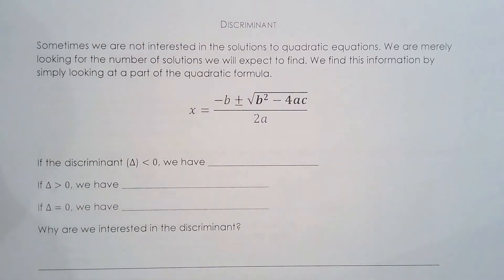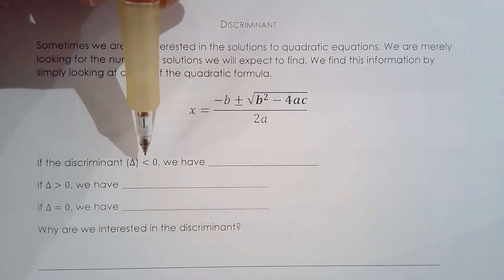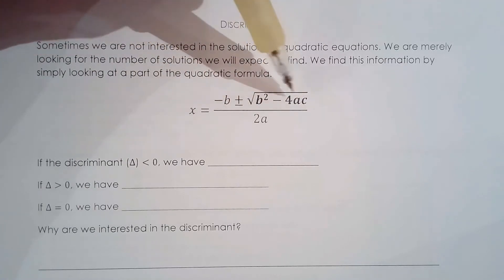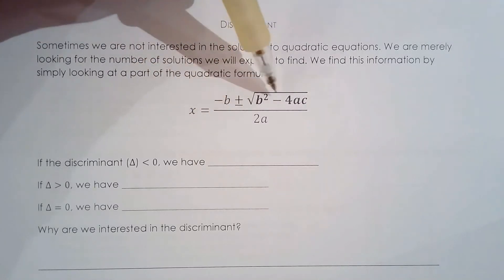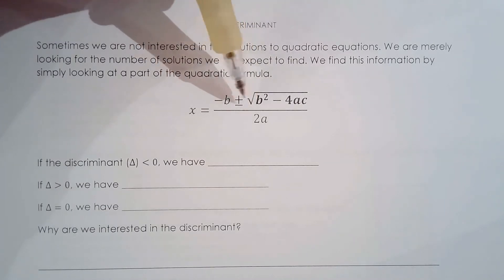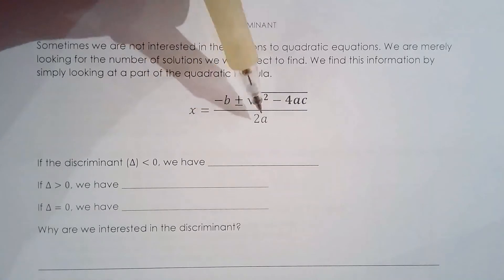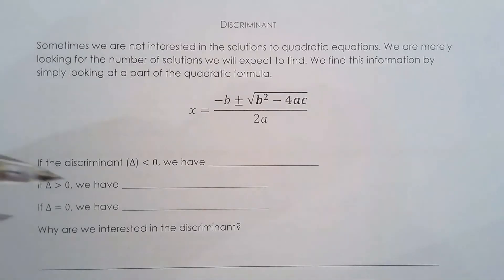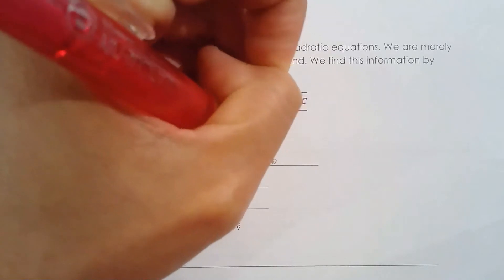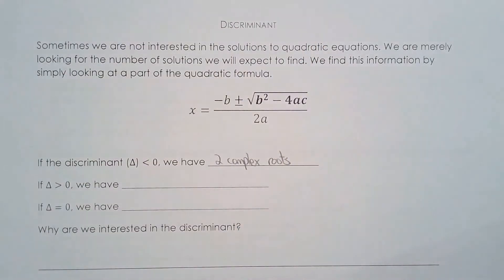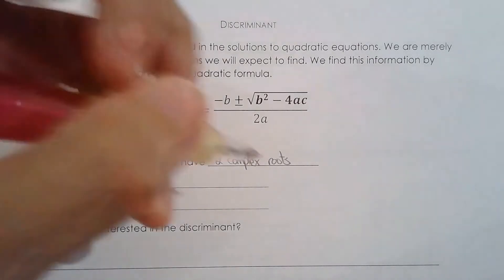The discriminant could be less than zero, equal to zero, or greater than zero. If the discriminant is less than zero — negative — think about the quadratic formula: you'd have plus or minus the square root of, say, negative 16, all over 2a. If it's negative, you'll have two complex roots, as we saw in one of the examples in the previous lesson.